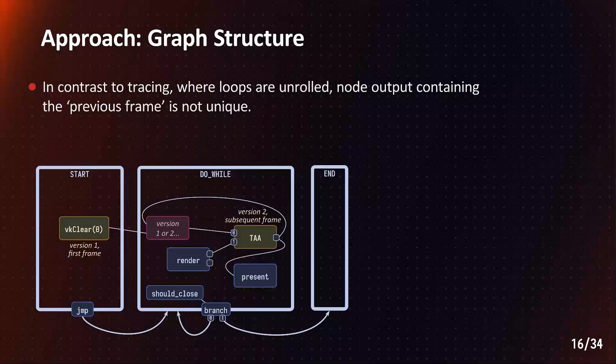In contrast to acyclic render graphs, the output node of a data dependency is not always unique. There may be multiple candidates or versions of a logical variable. In this example, the previous frame for TAA is either a cleared image in the first frame or the output of the previous iteration of the render loop.